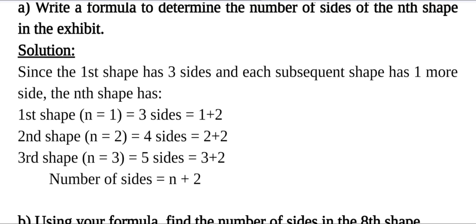For the second shape, where n = 2, 4 sides, 4 = 2 + 2. Third shape, where n = 3, 5 sides, 3 + 2. So we can generalize that we are adding 2 with the value of n. The number of sides can be given by n + 2, where n is the number of shape, the nth shape.